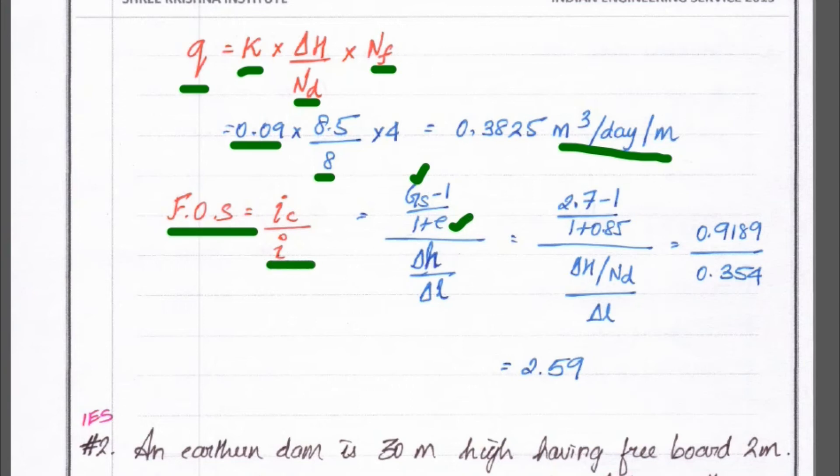So, again the i value. So, gradient equal to del h divided by del l. So, h is equal to del h divided by nd. So, that is del small h and this is del capital h. So, del h divided by nd. So, divided by del l. So, del l we know 3 and del h is equal to 8.5 and nd we know nd is equal to 8.